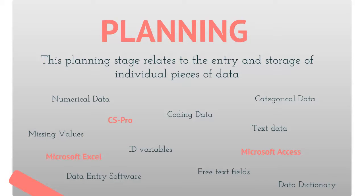Activities usually involve numerous pieces of data, and decisions need to be made prior to data entry about which text data is going to be coded and which is going to be stored as a free text field, which data are numerical, how missing values are going to be entered, and which variables are key identifier variables that need to be on all relevant data sets. Activities also need to plan if dedicated data entry software such as CS Pro is going to be used, or if they are going to use more general software such as Microsoft Excel. More details about this stage can be found in the storing numerical and non-numerical information video and the corresponding document.